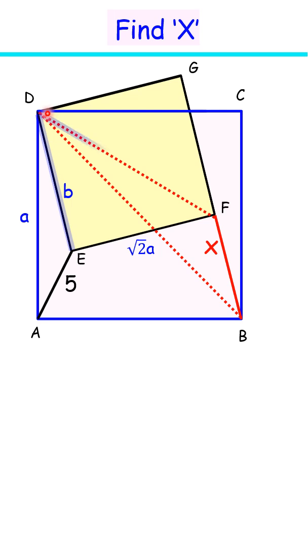Same way, small square if side is b, then the diagonal will be root 2b. This angle here is 45 degrees.